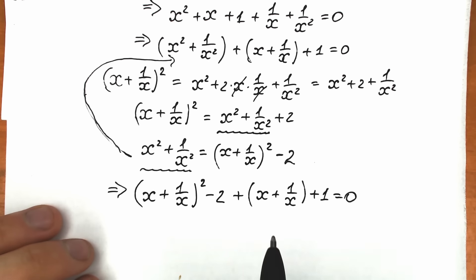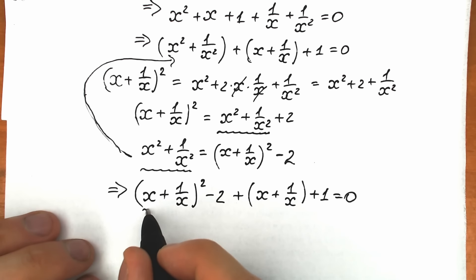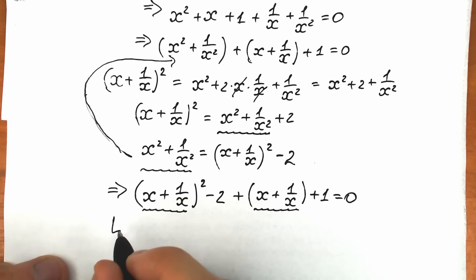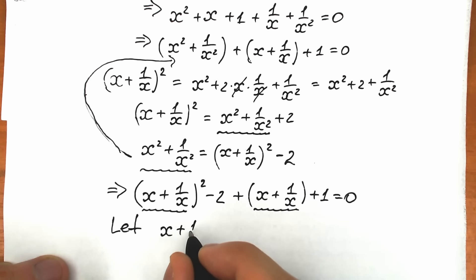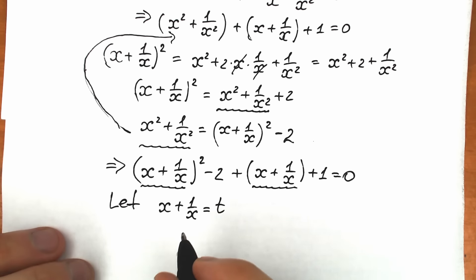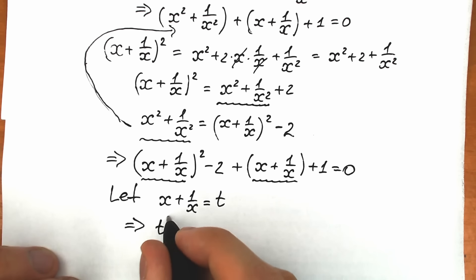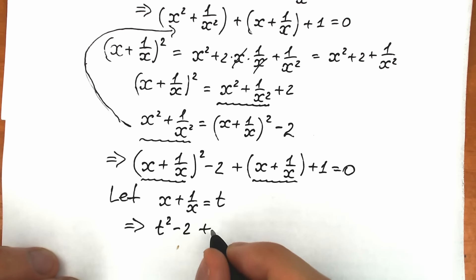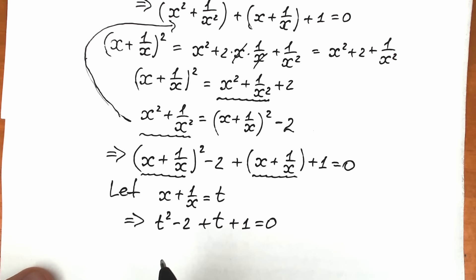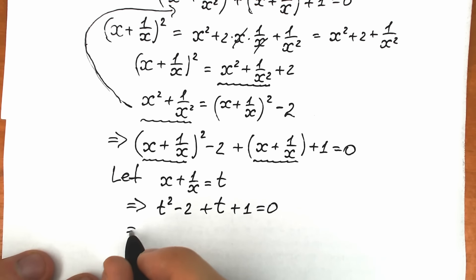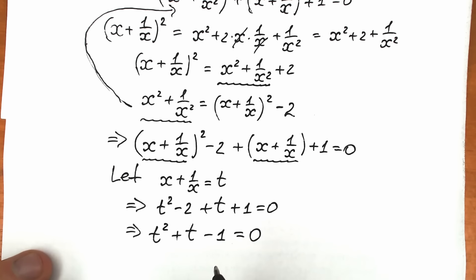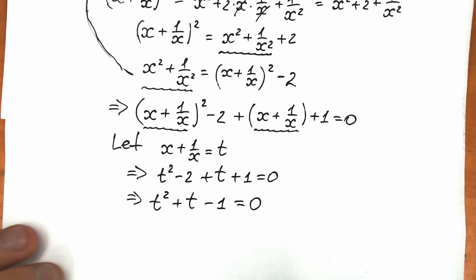Notice that x plus one over x appears in both places — so let's use the substitution t equals x plus one over x. As a result, we have the quadratic equation t squared minus two plus t plus one equals zero, which simplifies to t squared plus t minus one equals zero. This is a quadratic equation, so we can find the discriminant and solve it easily.